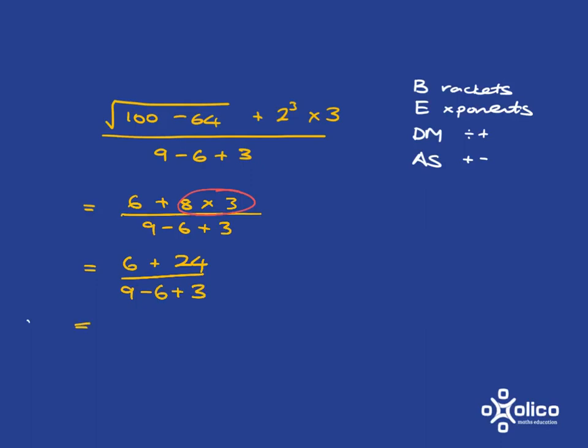So at the top of my fraction, I have 6 plus 24, which is 30. And at the bottom of my fraction, if I've just got addition and subtraction, I just work from left to right. So 9 minus 6 is 3, 3 plus 3 is 6. So I've got 30 over 6.